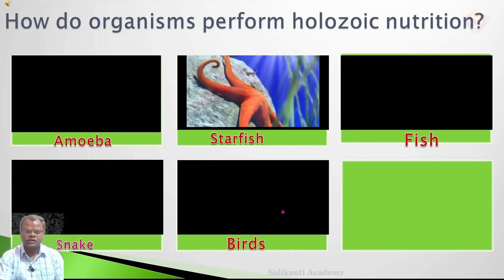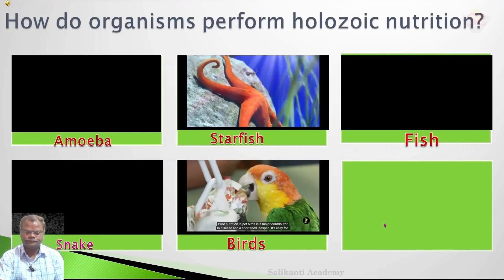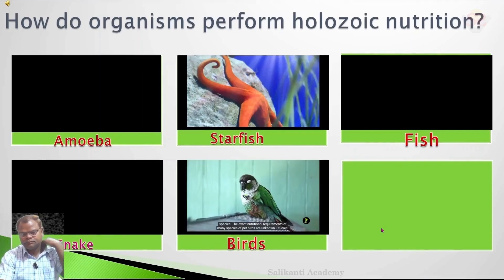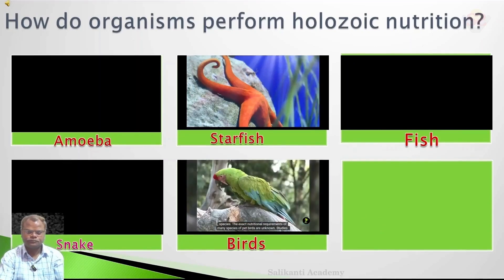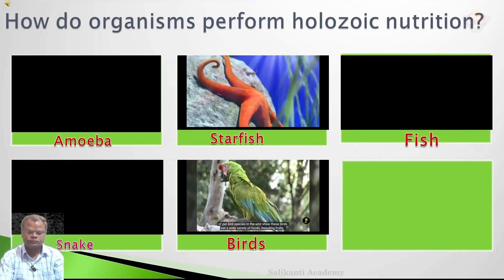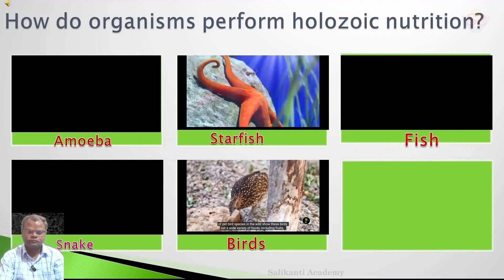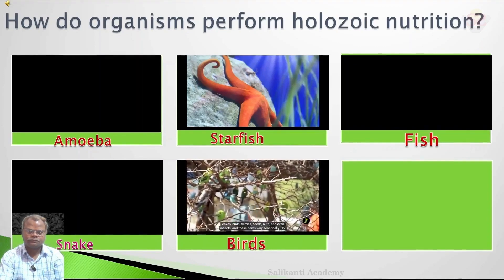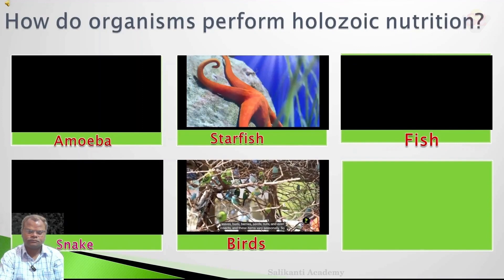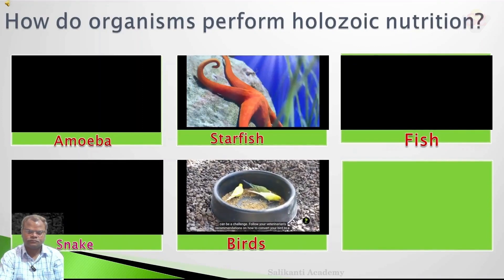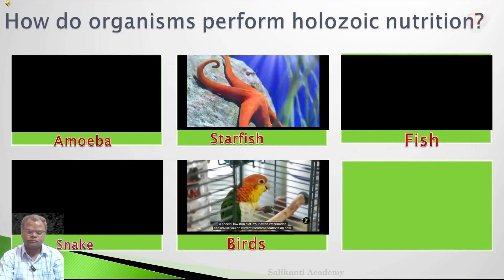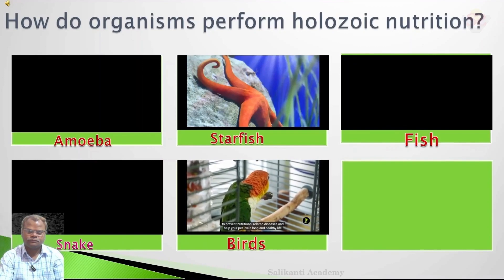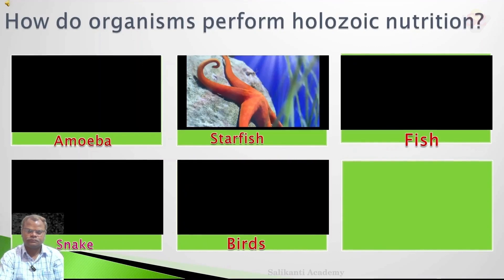Now we will see nutrition in birds. Nutrition in pet birds is a major contributor to disease and shortened lifespan. Requirements of many species of pet birds are unknown. Studies of pet bird species in the wild show they eat a wide variety of foods, including fruits, weeds, buds, berries, seeds, nuts, and even insects, and these items vary seasonally. Follow your veterinarian's recommendations on how to prevent nutritional-related diseases and help your pet live a long and healthy life.